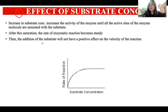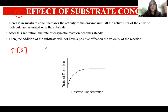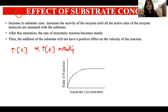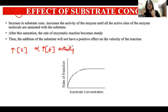The third factor is substrate concentration — how exactly it affects enzyme activity. As substrate concentration increases, enzyme activity also increases, because more substrates mean more collisions between the substrate and the enzyme active site, leading to more enzyme-substrate complex formation and eventually more product.